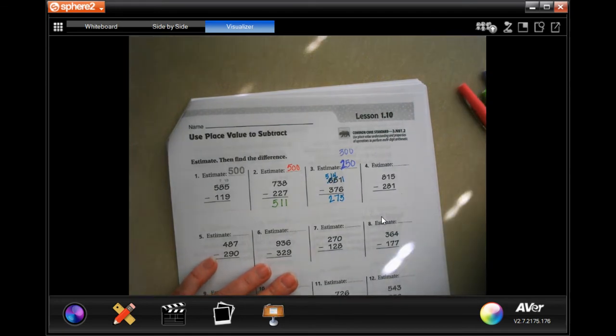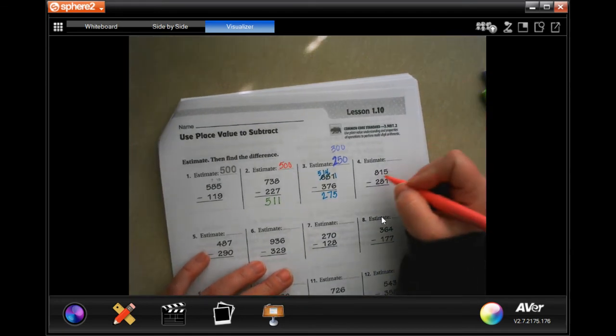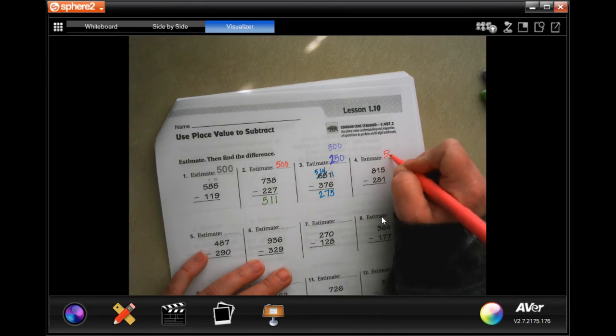Once you get used to it, guys, it won't be so bad. 815, we're going to round to 800. 281, we're going to round to 300. And 800 minus 300 is 500.